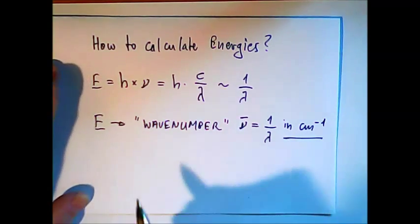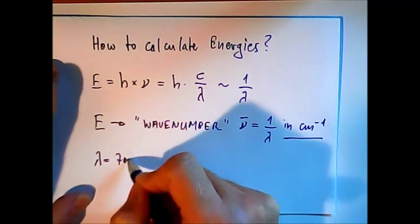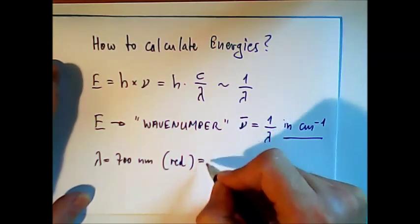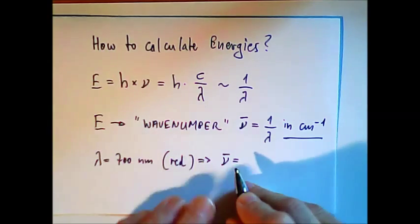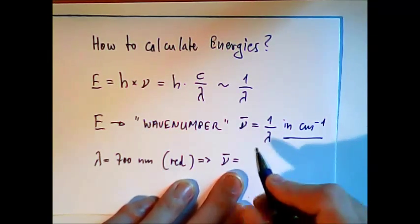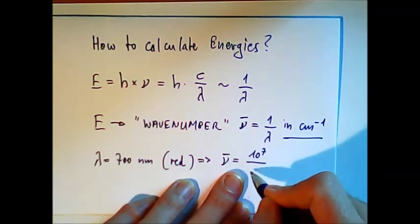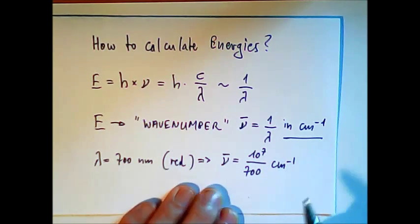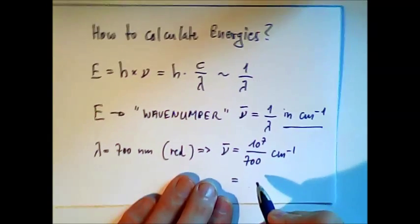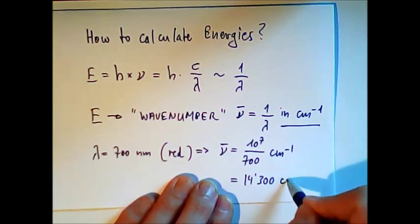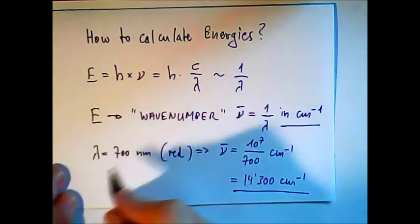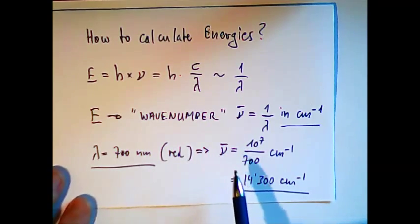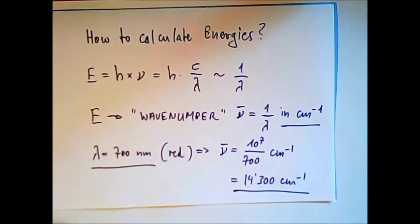Typical example: if we have light with a wavelength of 700 nanometers — that would be red light, long wavelength — then the wave number is 10 to the power 7 divided by 700, in units of centimeter minus 1, because we have to convert from nanometers to centimeters. When we calculate this, we get a value of about 14,300 centimeter to the power minus 1. So wavelength 700 nm corresponds to a wave number of 14,300 cm⁻¹.